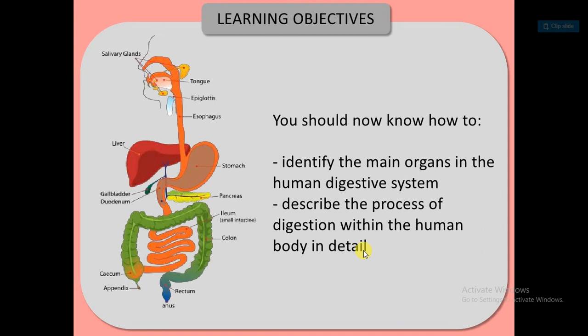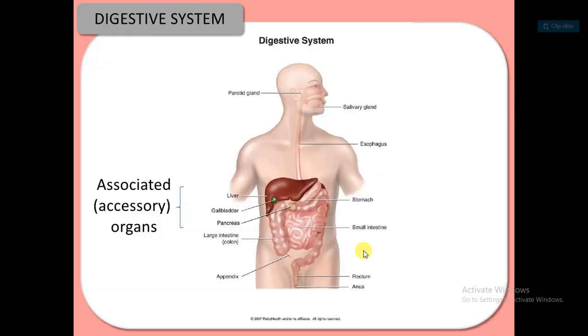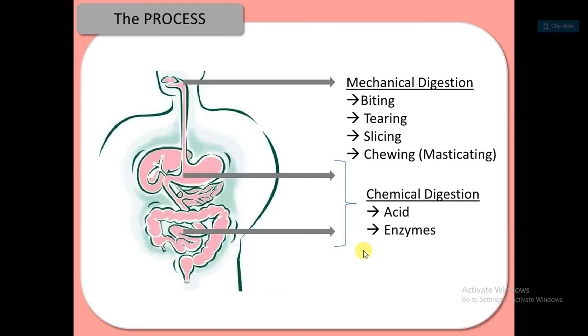You should know how to identify the main organs in the human digestive system and describe the process of digestion within the human body in detail. The digestive system belongs to associated accessory organs and the alimentary canal. The process begins with mechanical digestion, which involves biting, tearing, slicing and chewing.